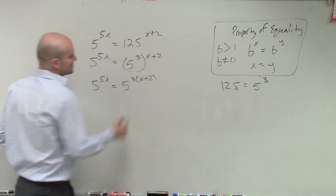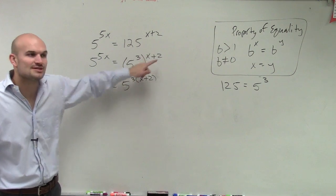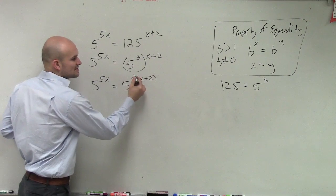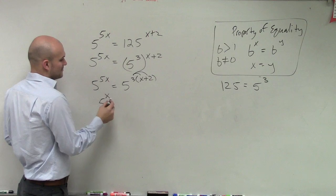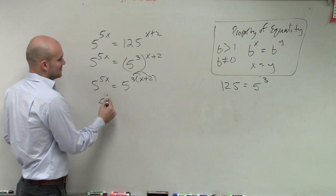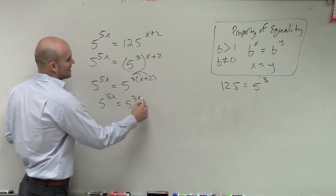Now, notice, ladies and gentlemen, I'm multiplying a binomial. I'm multiplying by x plus 2. So I put it into the parentheses so that I can apply my distributive property, so I get 5 raised to the 5x equals now 5 to the 3x plus 6.